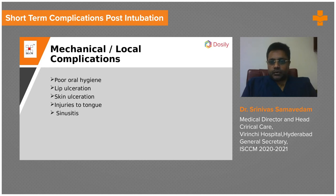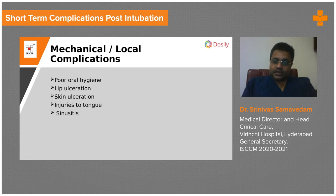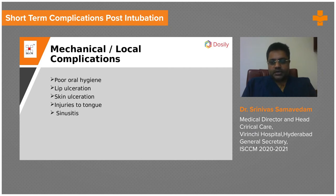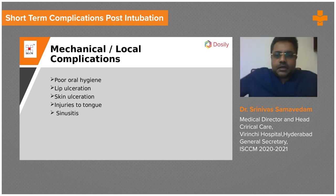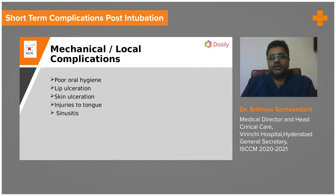If you do not pay proper attention to fixing the tubes, changing the tube position, or where your suction cannula is going when you put it into the mouth for suction, you could end up injuring the tongue of the patient. These are all mechanical and local complications. But the most important local complication that happens because of mechanical ventilation is sinusitis.